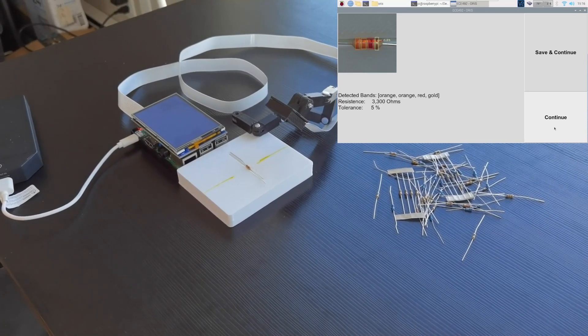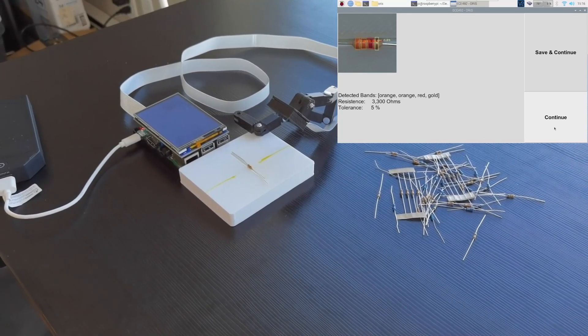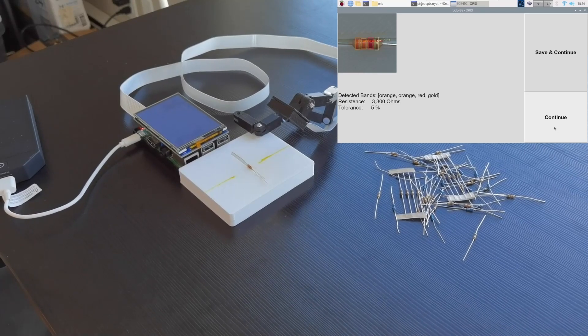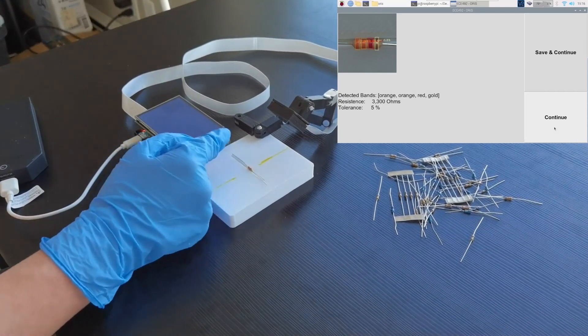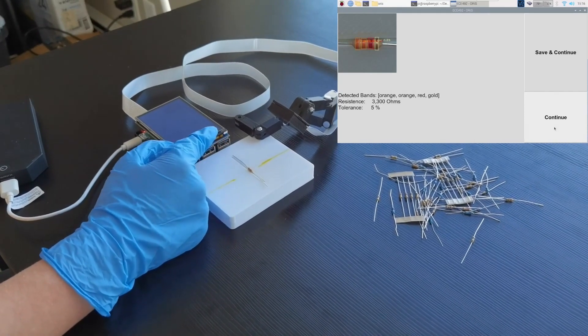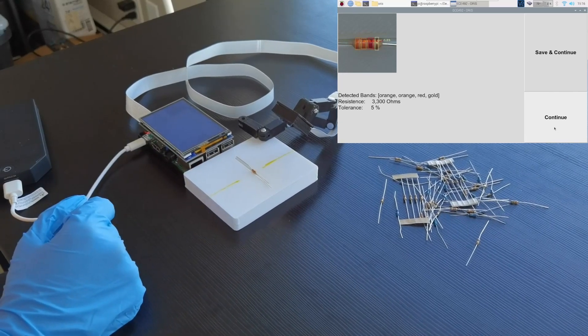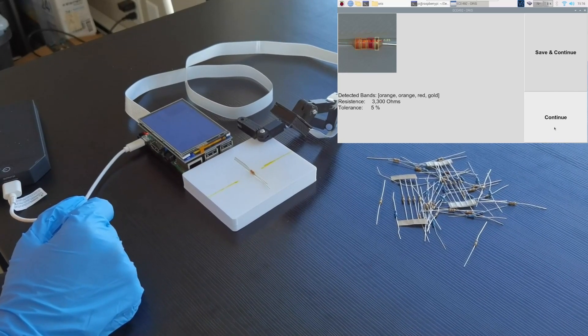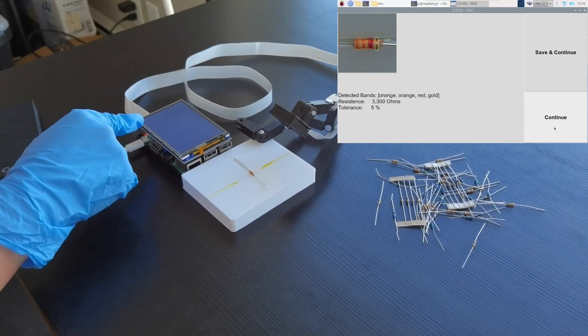I can verify what ORIS sees by a quick visual check on the resistor to ensure that all the color bands are detected correctly. Now, I can choose whether to save the detection result for further retrieval or just continue to the next scan. In this case, we can see the ORIS correctly recognize all the color bands on the resistor and give us the right result.